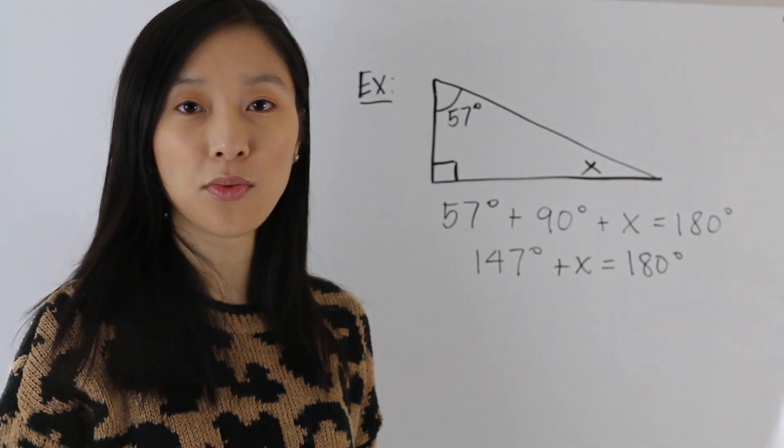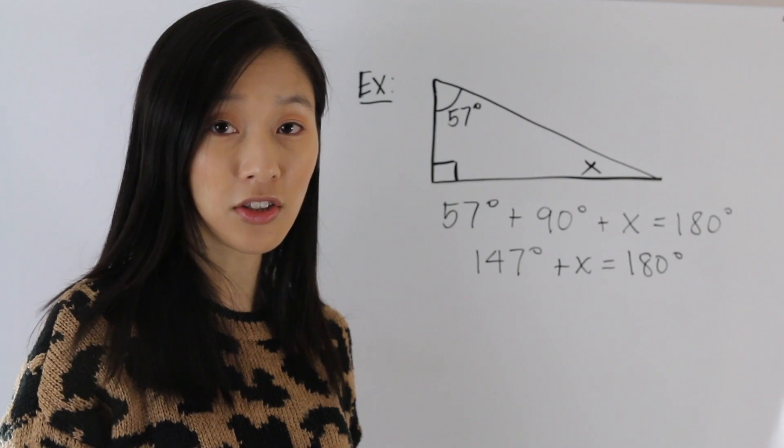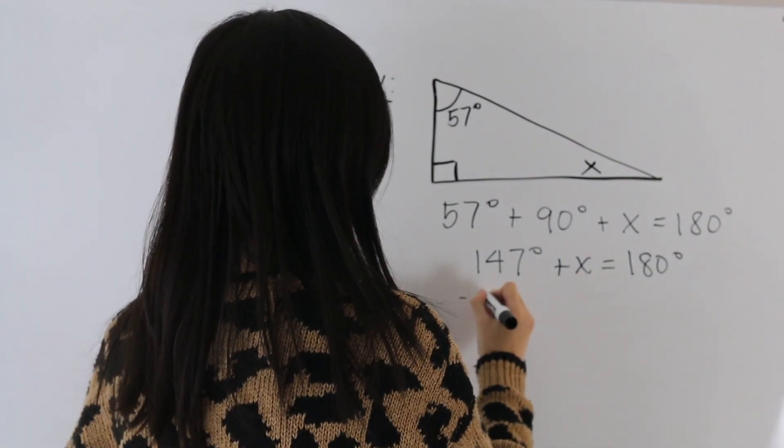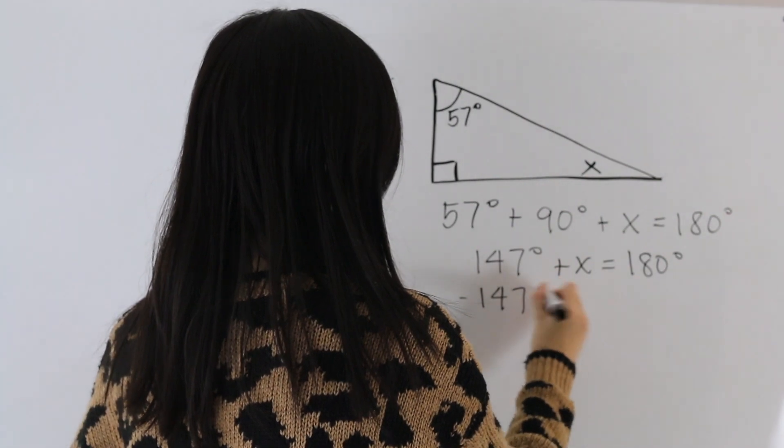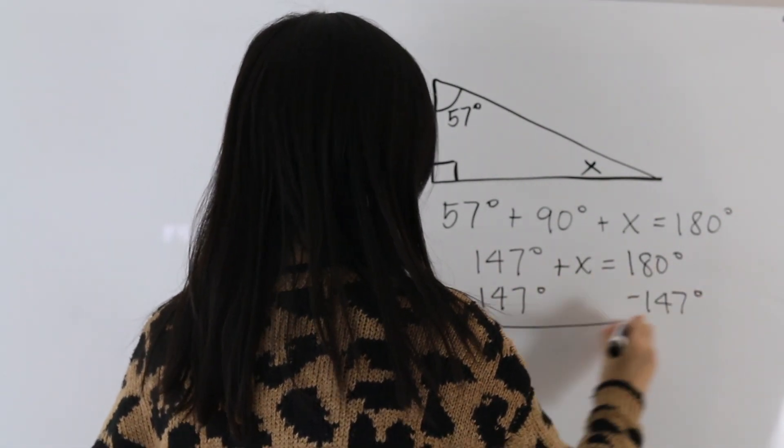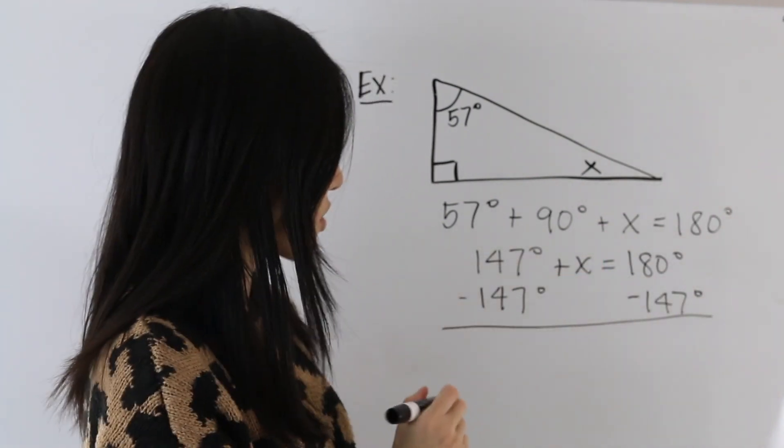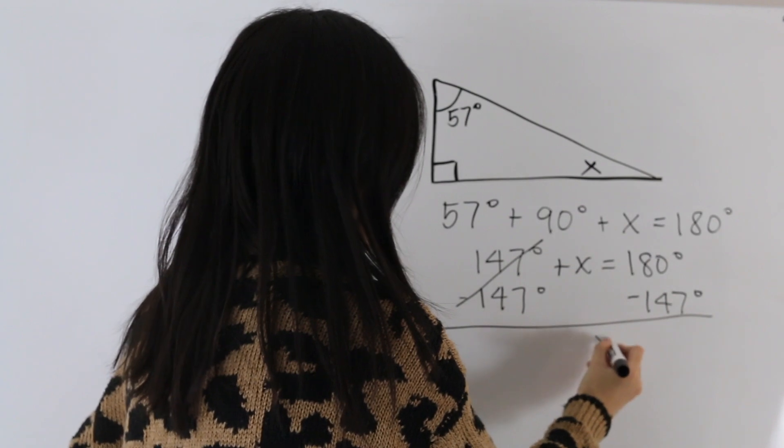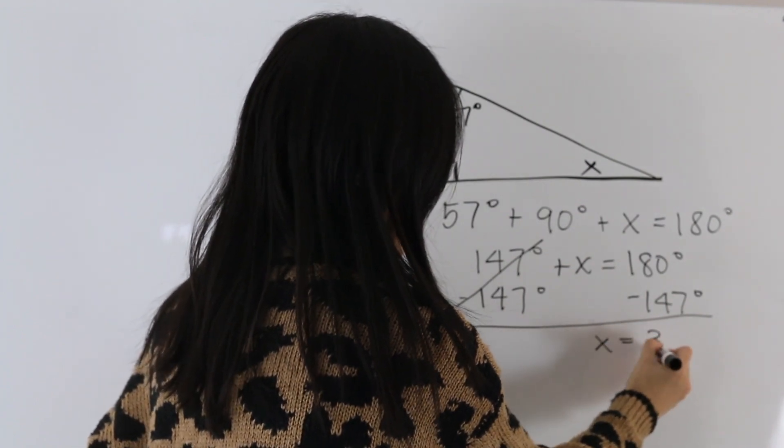And from here, we're going to want to solve for X. And we're going to do that by subtracting both sides by 147. And so these two cancel, and we're left with X is equal to 33 degrees.